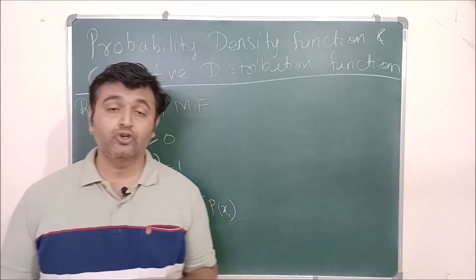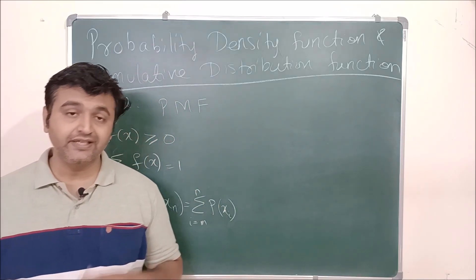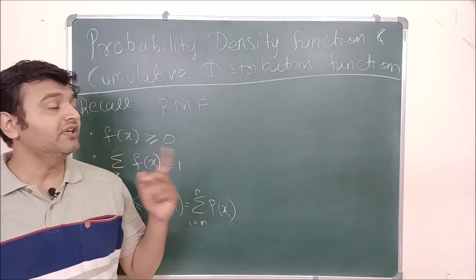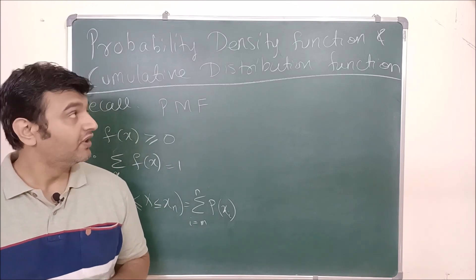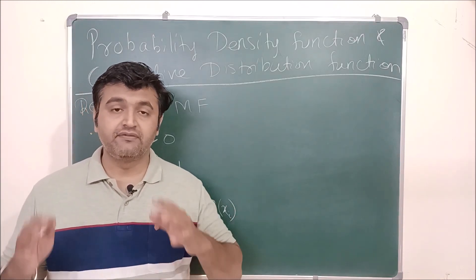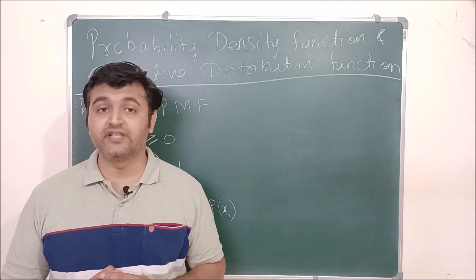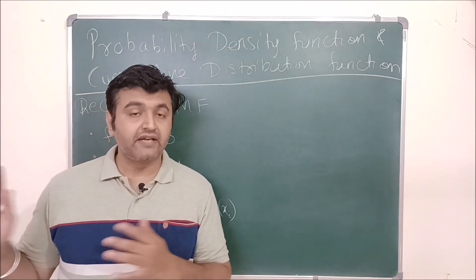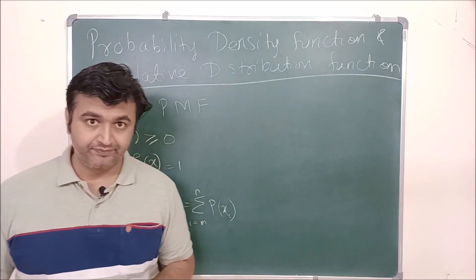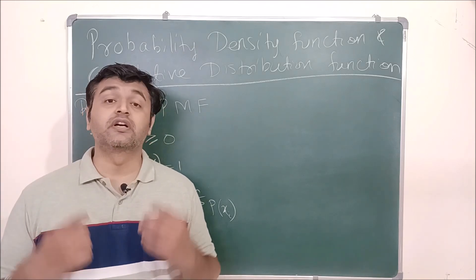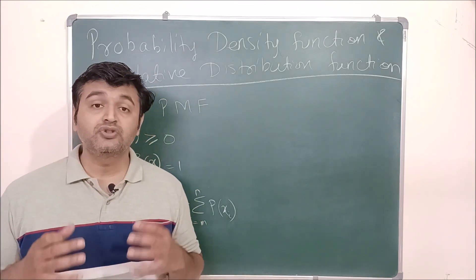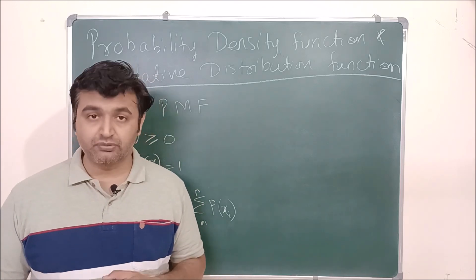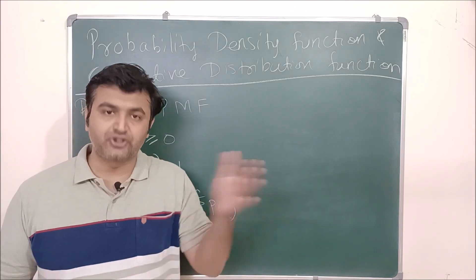Hey everyone. In the last lecture we talked about probability mass function and cumulative distribution function. Today we are going to talk about probability density function and cumulative distribution function. We study this when we are dealing with continuous random variables. When we talked about PMF and CDF, that was for discrete random variables. When we have a discrete or continuous random variable, we want to study its probability distribution — how the probability is distributed.